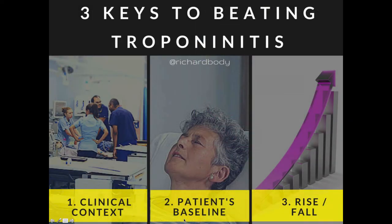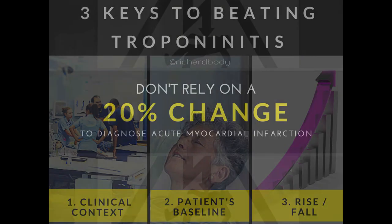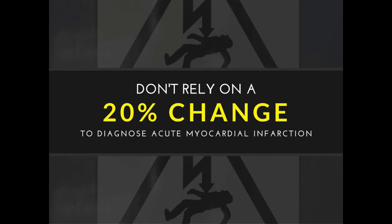Next, we need to look at whether there's a rise or fall of cardiac troponin on serial sampling. Traditionally, we'd accept that a 20% change in troponin concentration on serial sampling is significant — developed by biochemists based on assay precision, to differentiate real change from assay imprecision. But nowadays we realise that's a little flawed, and we probably shouldn't be accepting the 20% relative change, especially with high sensitivity troponin assays.